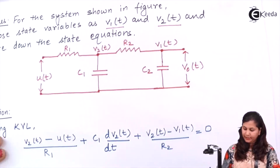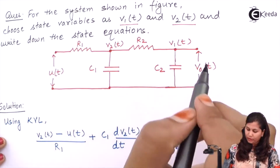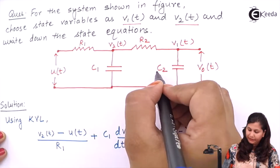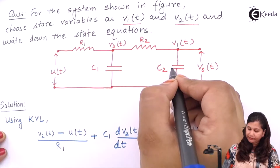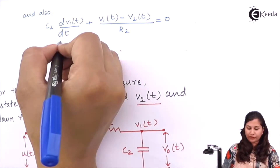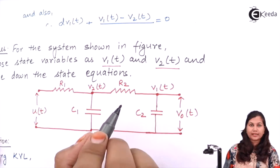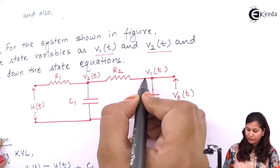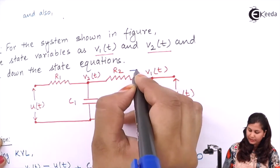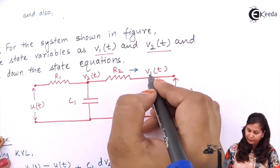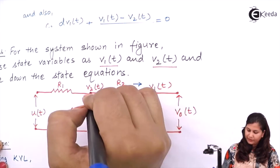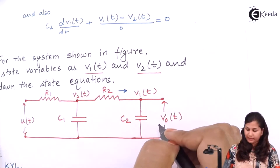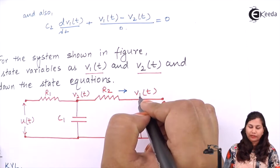How we have written this at this node: the current through capacitor C2 is C2 multiplied with dv1(t)/dt. The current across resistance R2 is v1(t) minus v2(t) upon R2, equals zero, since we consider the current in this direction for this node. Also, v0(t) equals v1(t).